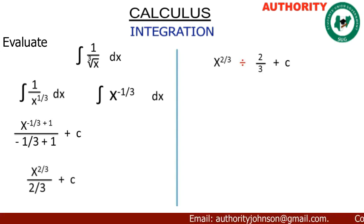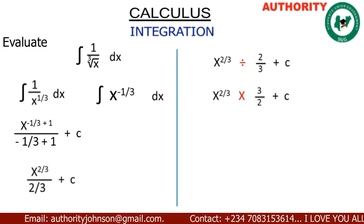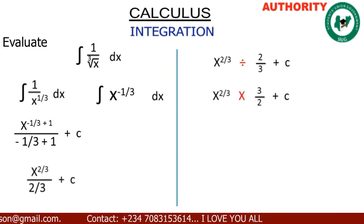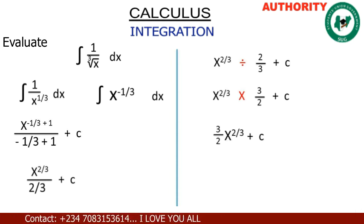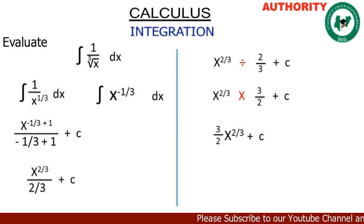We have x raised to the power 2/3. This division will turn to multiplication and there will be inversion. That means we're going to have x raised to the power 2/3 times 3/2 plus c, which gives us 3/2 x raised to the power 2/3 plus c. So therefore the integral of 1 all over the cubic root of x dx is equal to 3/2 x raised to the power 2/3 plus c. Thank you very much for watching — let's take more examples.